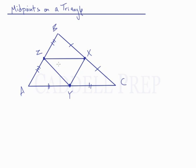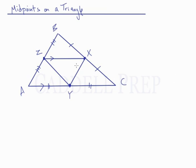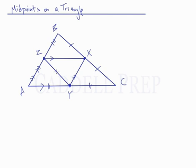Now let's look at this new triangle that we drew: triangle XYZ. Something you should notice is that line segment ZX is parallel to AY. Also, line segment AZ is parallel to YX. And lastly, line segment ZY is parallel to line segment BX. So let's note those as being parallel.